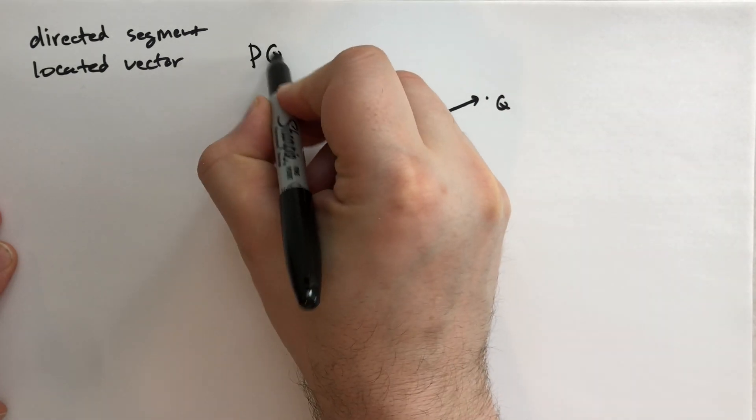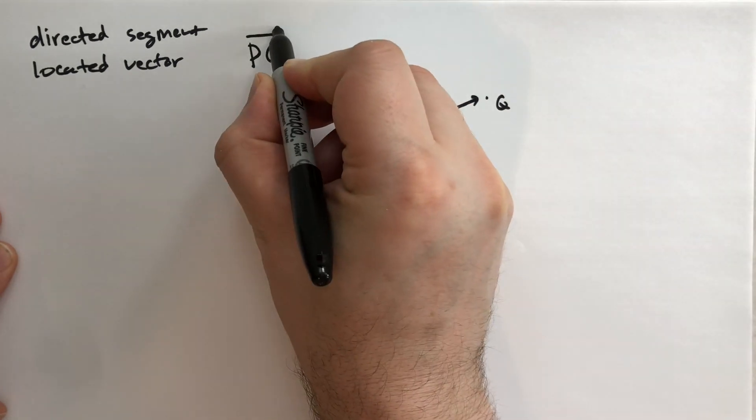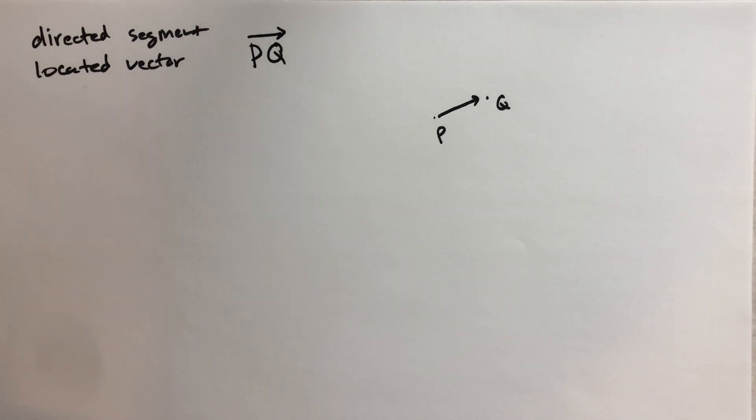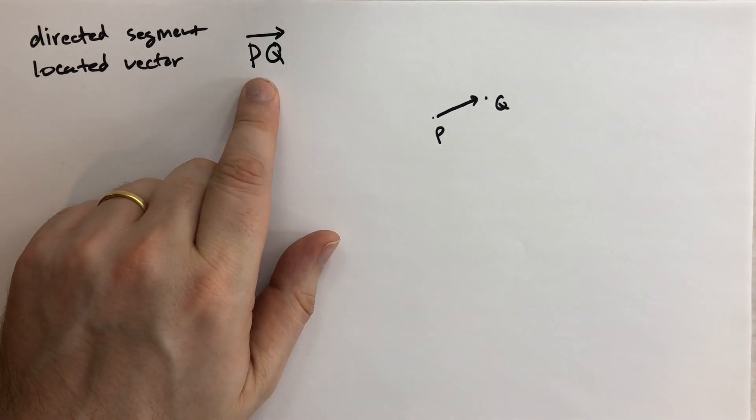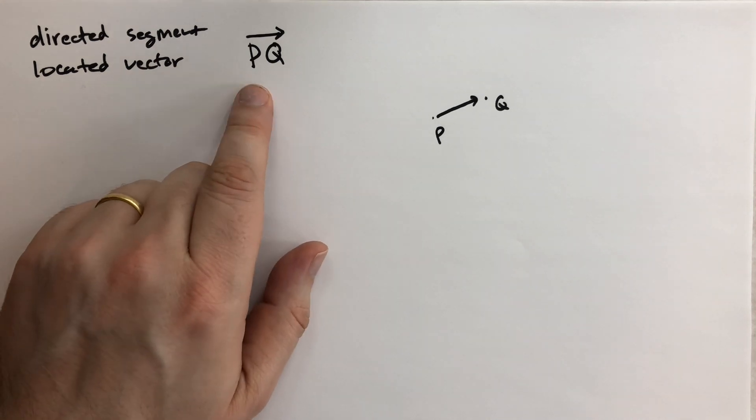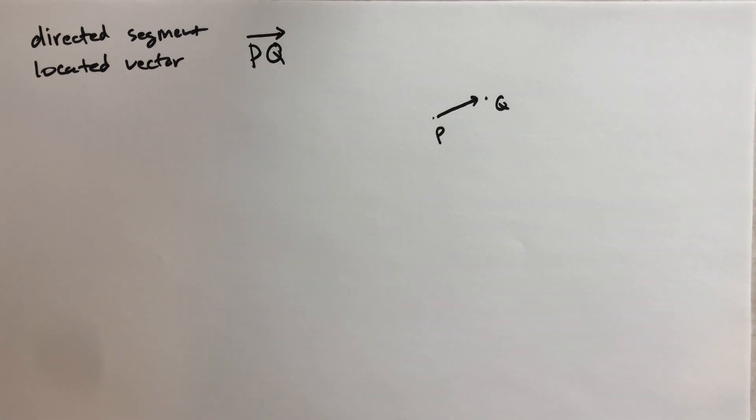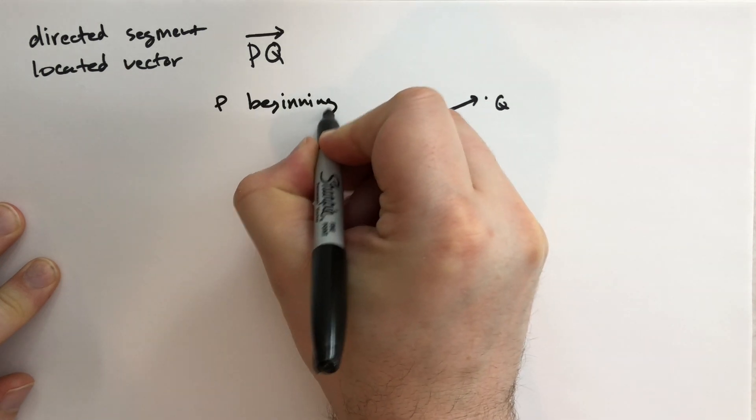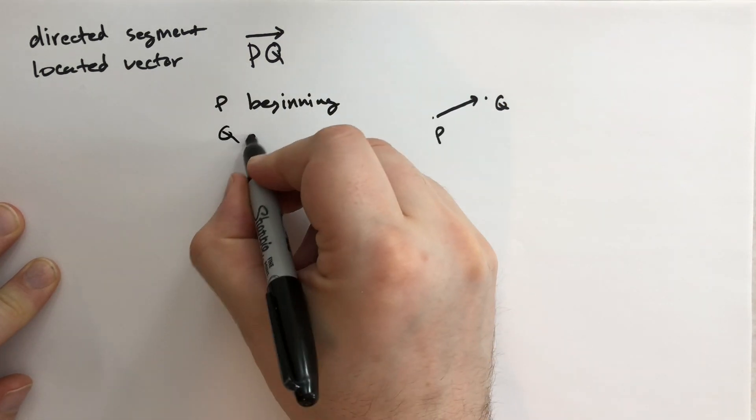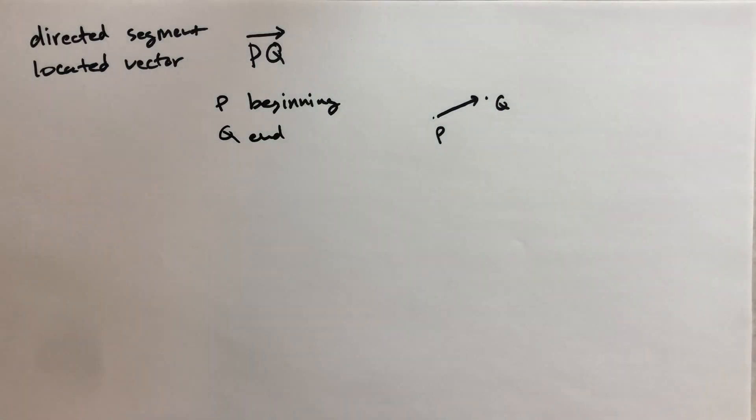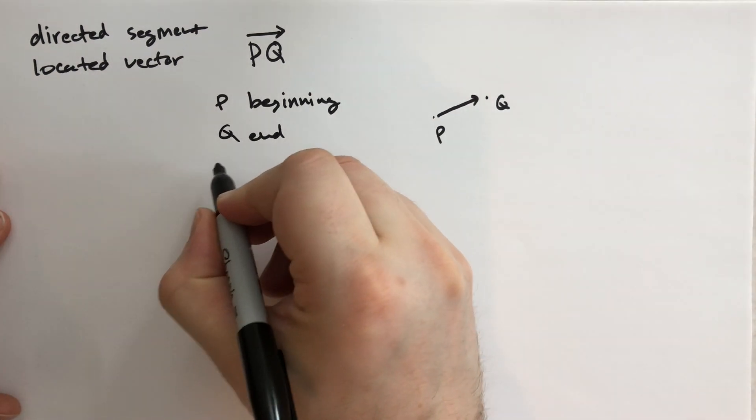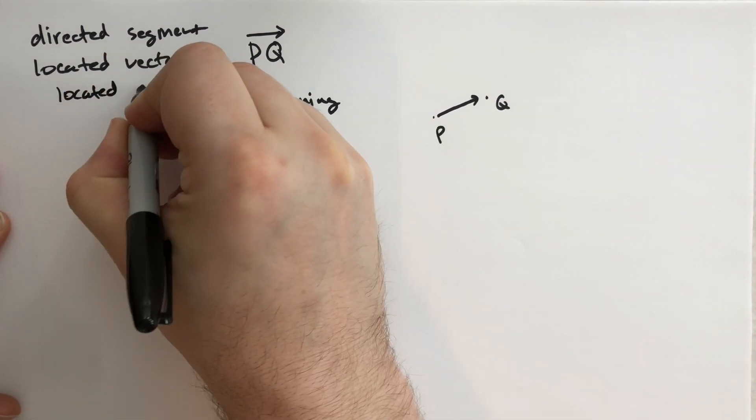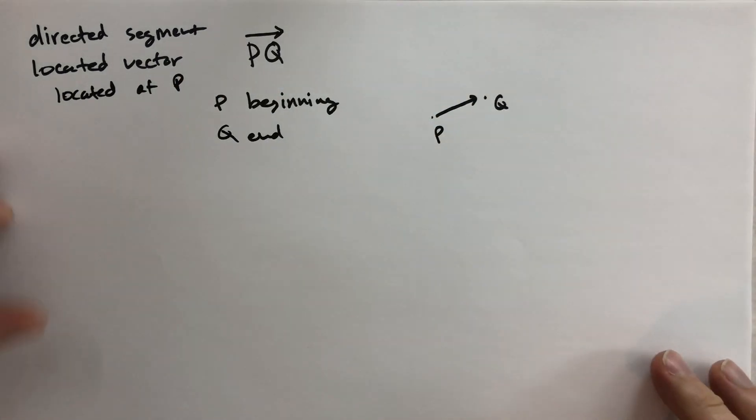We'll use the symbol PQ with an arrow on the end. This is typically the notation you'll see for vector algebra. Here he's using it as a located vector that starts at P and goes to Q. We say that P is the beginning point and Q is the end point. The located vector is located at P. If we did not locate it at P, it would just be a vector.